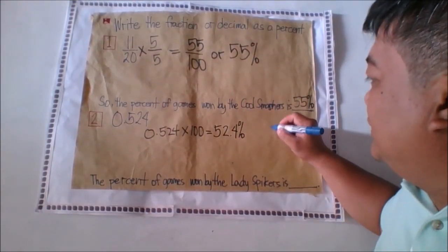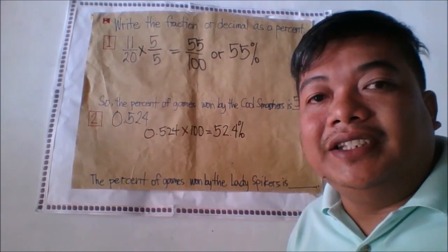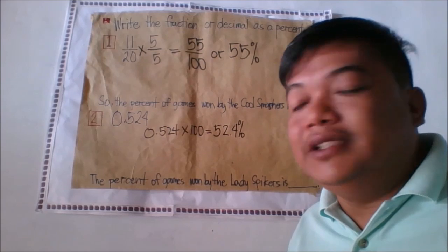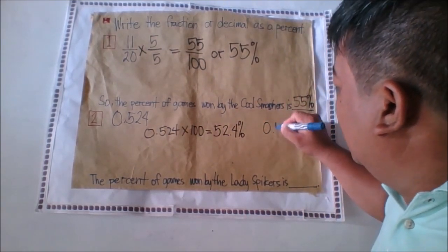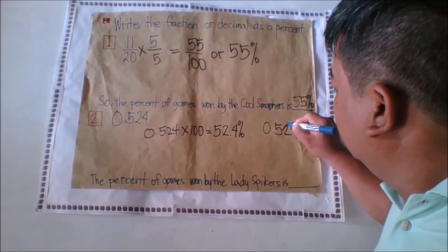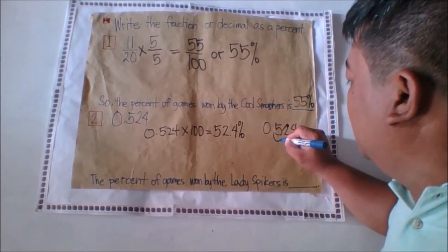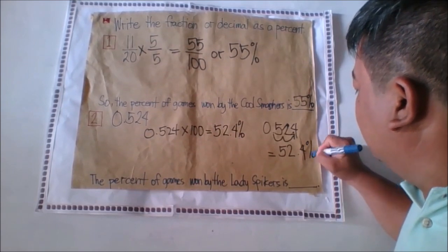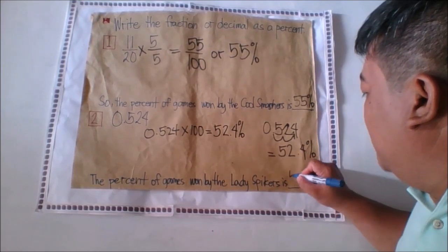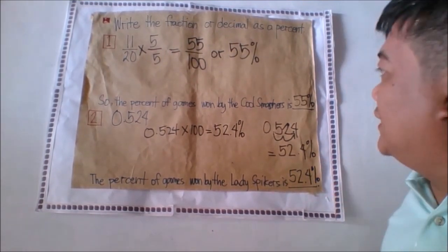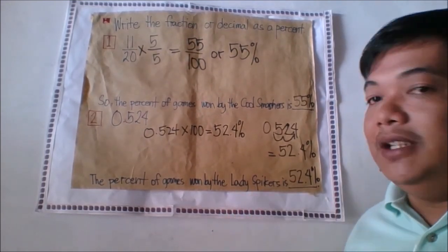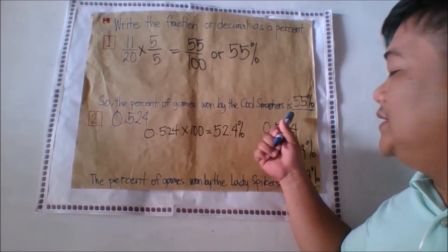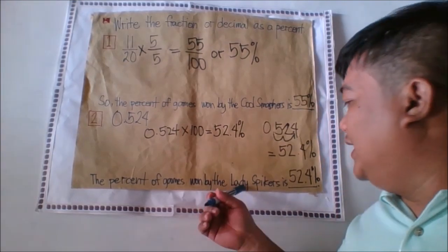The second method: remember that multiplying a decimal by a power of 10 means you just move the decimal point to the right. For example, with 0.524, move two decimal places to the right and it results in 52.4 percent. So the percent of the games won by the Lady Jets Spikers is 52.4 percent. Now we can easily compare: the Coal Smashers won more games than the Lady Jets.